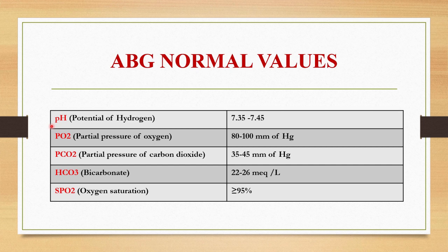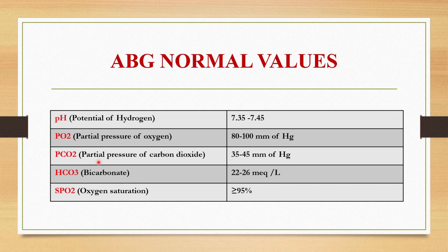pH stands for potential of hydrogen — it is the measure of hydrogen ion concentration, and the normal value ranges from 7.35 to 7.45. The next one is PO2, partial pressure of oxygen, that is the amount of dissolved oxygen in the blood, and the normal value ranges from 80 to 100 mm of mercury. Next one is PCO2, partial pressure of carbon dioxide, that is the amount of dissolved carbon dioxide in the blood, and the normal value ranges from 35 to 45 mm of mercury.